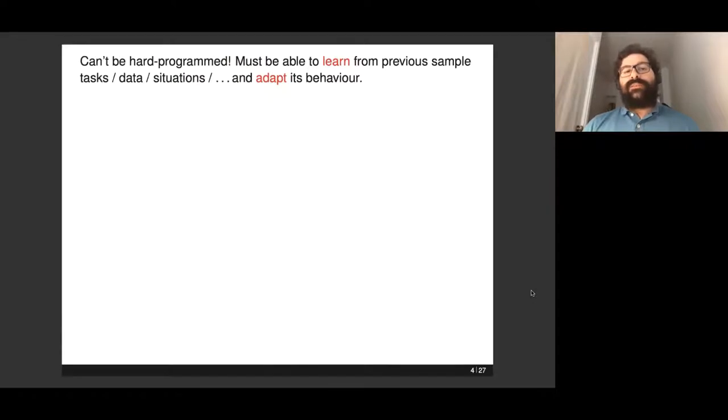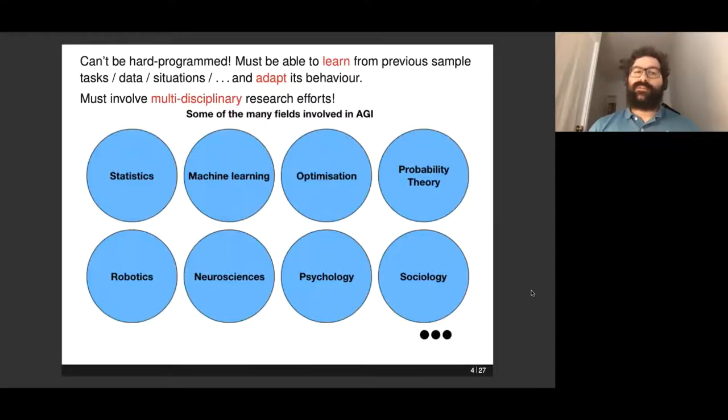The point is this can't be hard-programmed. The combinatorics of those situations actually requires that this entity must be able to adapt and must be able to learn from previous situations, tasks, and data sets. So there's this quest for adaptability, and this is where machine learning kicks in.